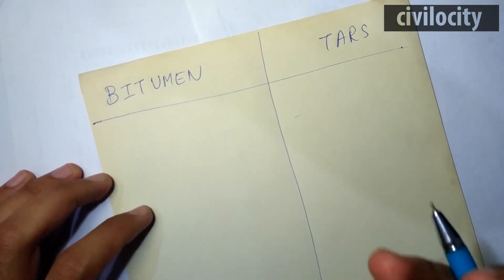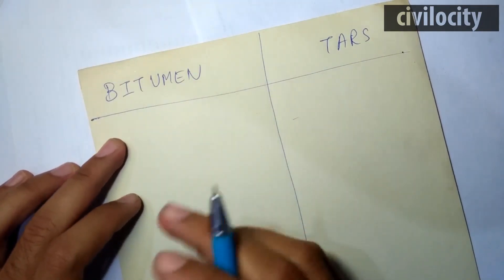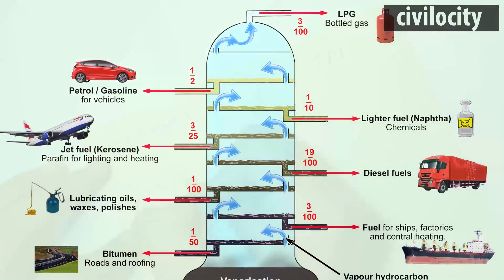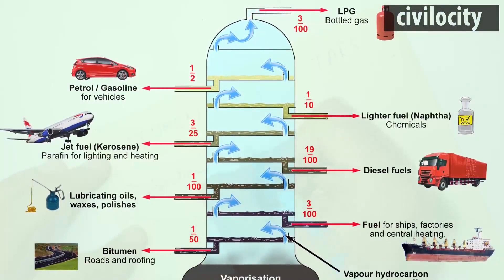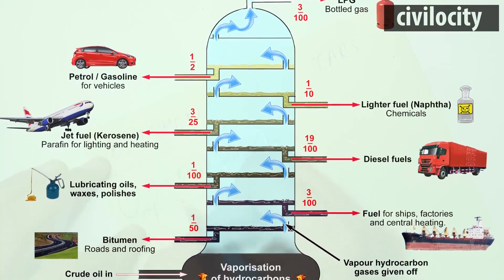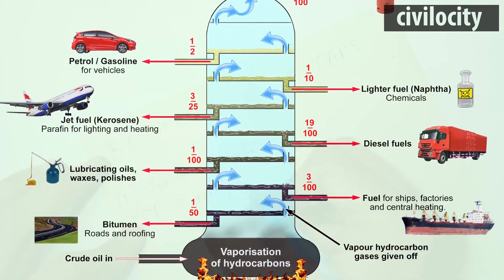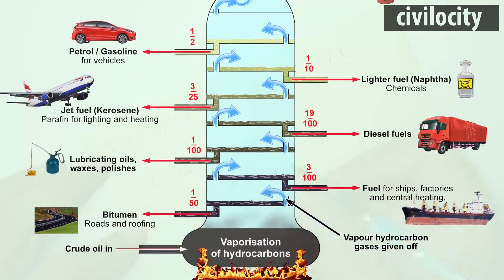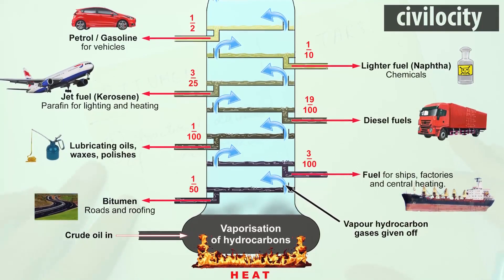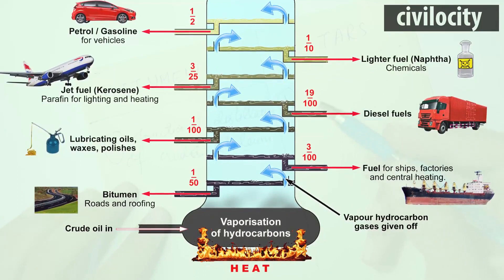Let's talk about how they are first formed. Bitumen is formed by fractional distillation of crude petroleum — a process of refining crude petroleum — and bitumen is the last product. Sometimes it's called the waste product in this process. The products formed during fractional distillation are: LPG, gasoline, petrol, kerosene, diesel, lubricant oil, wax, and finally bitumen.